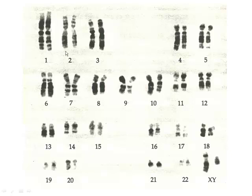Where do these chromosomes come from? Originally they came from the person's father and mother. Looking at one pair — pair number one, for example — the pairs go from long toward the beginning to short toward the end. One chromosome of each pair came from the person's mother, and one came from the father. One came originally in the egg cell, one came originally in the sperm cell.